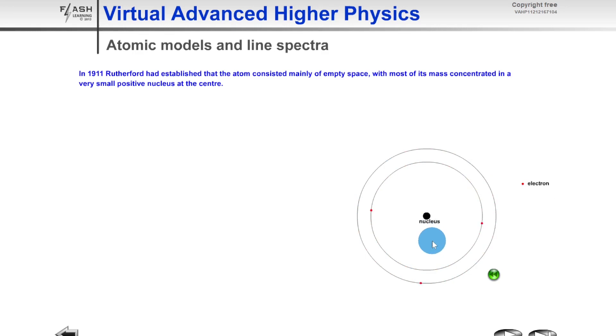So if you look here you can see we've got a positively charged nucleus in the centre of the atom and then we've got electrons which orbit in circular motion around the nucleus of the atom. And this is one of the most basic models of the atom that we can think of.